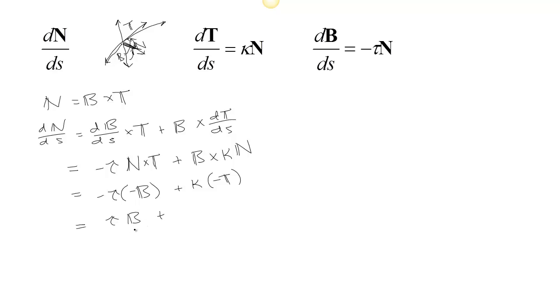So we find out that dN/ds actually has two components. It's got a component in the binormal direction and then minus a component in the unit tangent direction.